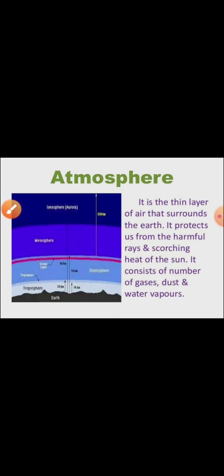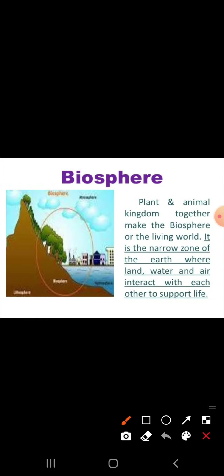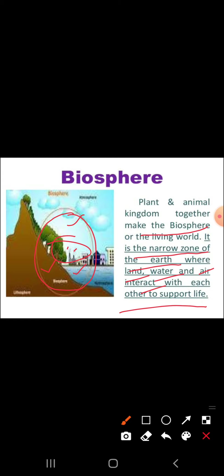Biosphere is where you have water, land, and air together. Plant and animal kingdoms together make the biosphere. It is the narrow zone of the earth where land, water, and air interact with each other to support life. That is why it is called a narrow zone — because land, water, and air interact to support life.